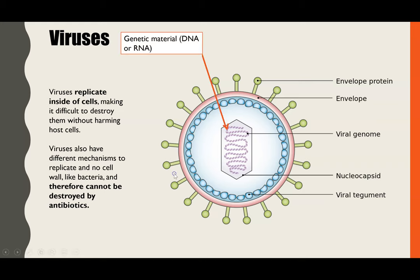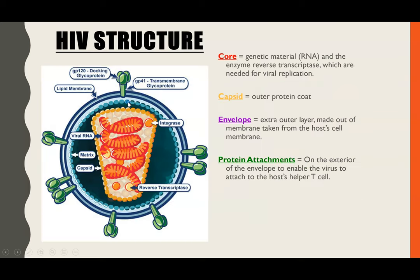The structure of a virus is more basic — they have the protein envelope, a protein capsid, and within that they have the genetic material, which can be DNA or RNA. HIV is one of the viruses which has RNA.